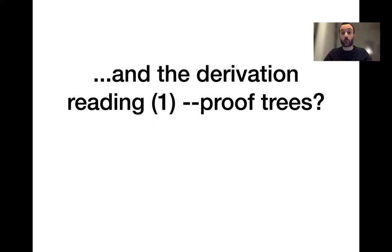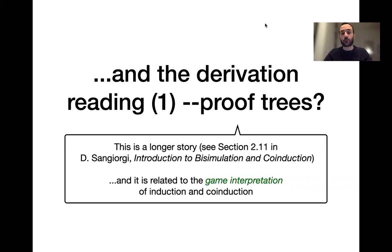As for the first reading using derivation proof trees, this is a much longer story related to the notion of game interpretation of induction and co-induction. If you are interested, I suggest reading section 11 in chapter 2 of the book by Davide Sangiorgi, 'Introduction to Bisimulation and Coinduction'. With this, I'm done with the second lecture of this course. See you for the exercise session.